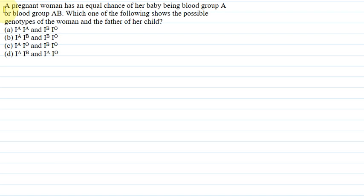Hello everyone, I am your teacher for this question. Let me explain this question to you. The question says that a pregnant woman has an equal chance of her baby being blood group A or blood group AB. Which one of the following shows the possible genotypes of the woman and the father of her child?